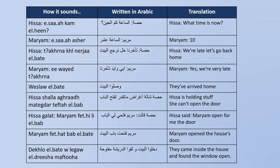Hissa says 'Maryam, fathi li el bab' — Maryam, open the door for me. Note on grammar: 'qalat' means 'said' when referring to a female. For a male, like Muhammad, you say 'qal.' For a female like Hissa, you must say 'qalat,' not 'qal.' So: Hissa qalat, Muhammad qal.